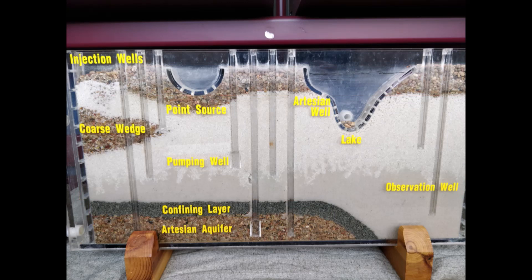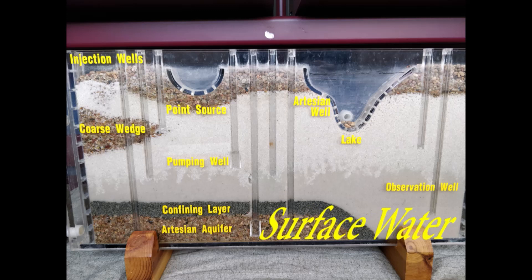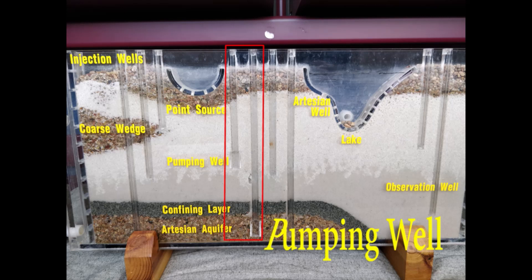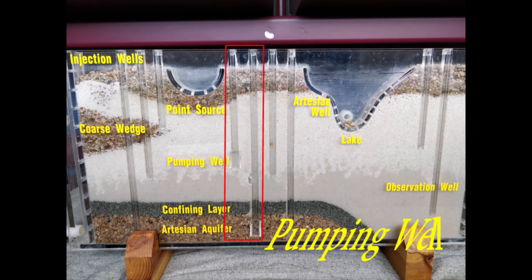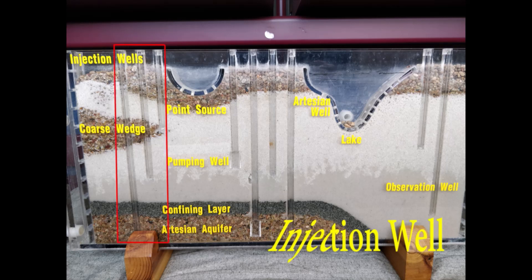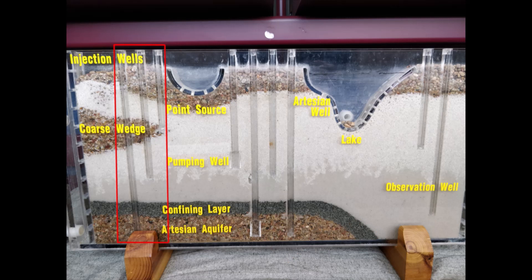Let's look at the surface water source. Surface water is the water above the surface of the land. In this particular model, our surface water source is the lake. Next, we have our pumping wells — these are the wells we use to pump water to the surface, and in the model they have the little boxes at the end of them. By comparison, the injection wells are over there, and they are the wells where we can pump water back into the ground.